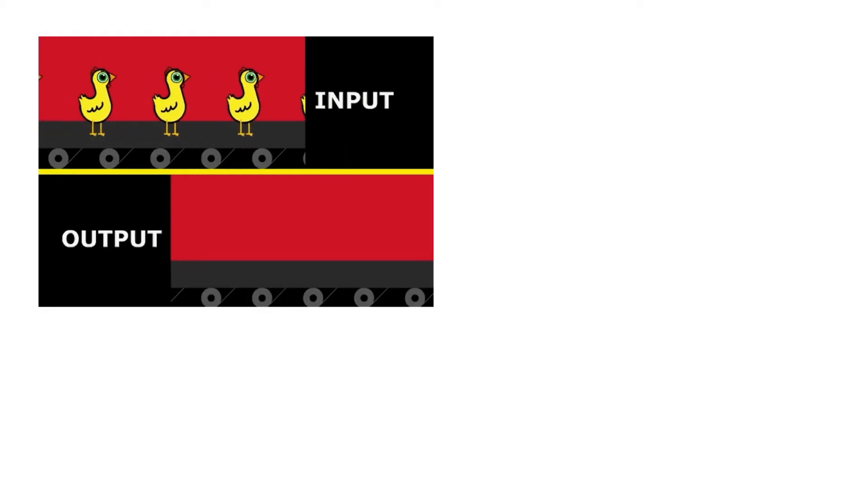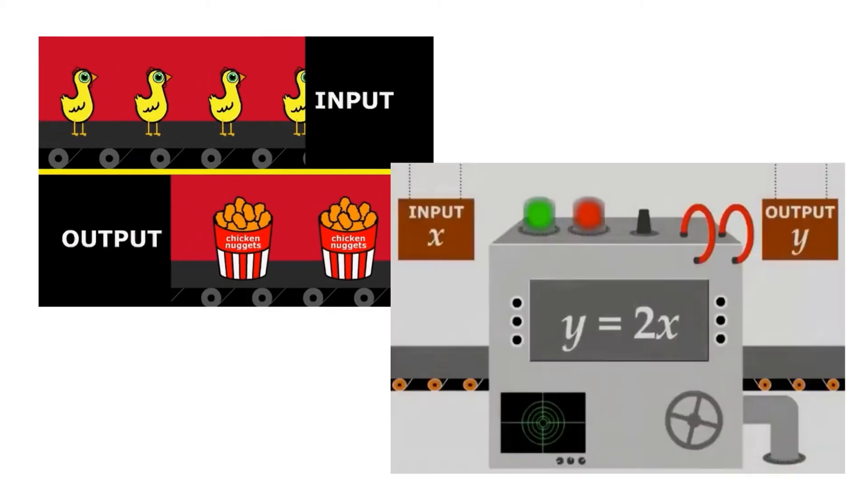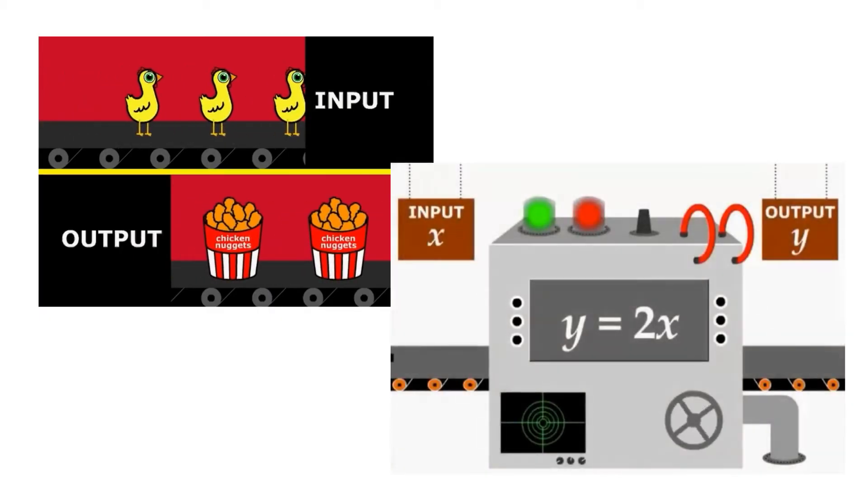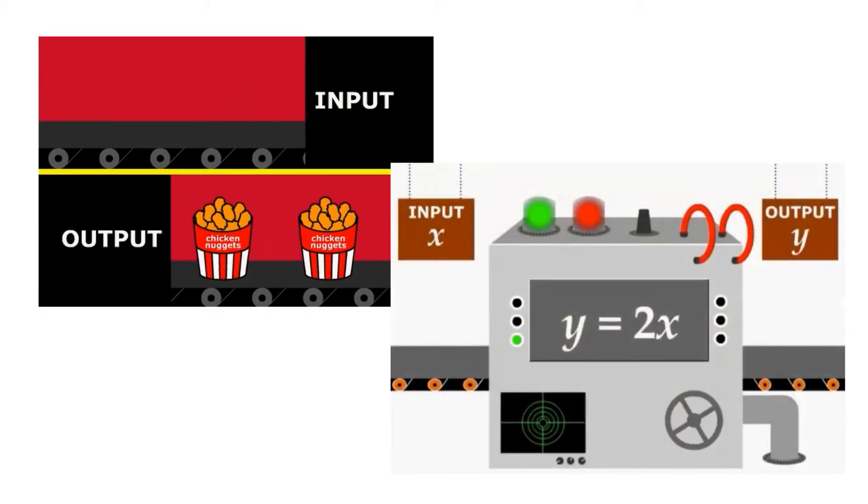In the same way chicken goes into a factory to make chicken nuggets, we can think of a function like a machine. The input or X goes into the machine, goes through a rule and then we get an output. So here we can see in this example the input goes into the machine and follows the function rule. In this case the rule is Y is equal to 2X and on the output you're getting the value for Y.